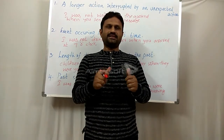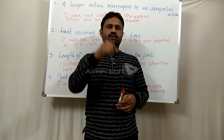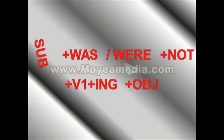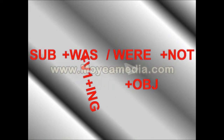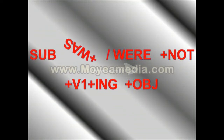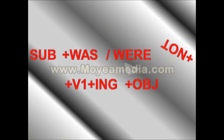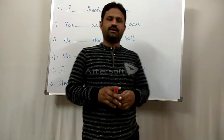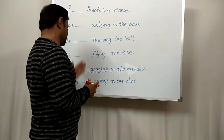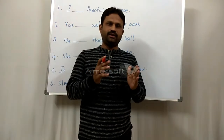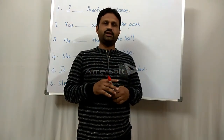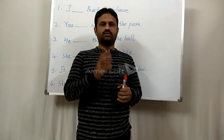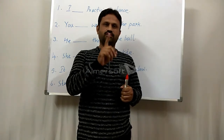Now, look at the past continuous negative structure on the PowerPoint presentation. Let us practice a few sentences on the board. We have six sentences. While filling up the blanks in past continuous negative form, we have two helping verbs: was and were. We must be careful in choosing was or were.